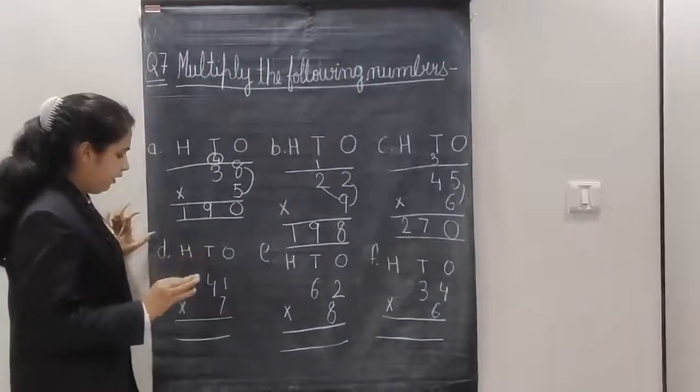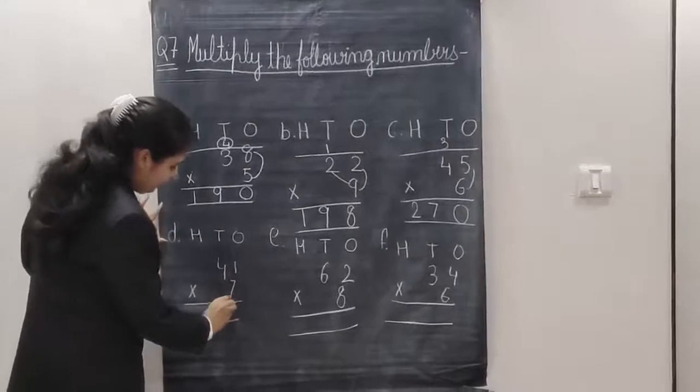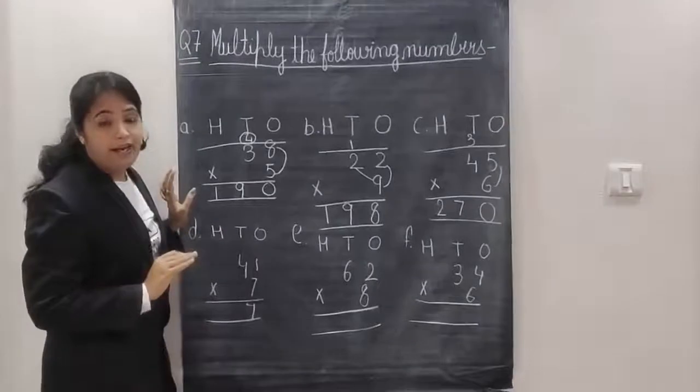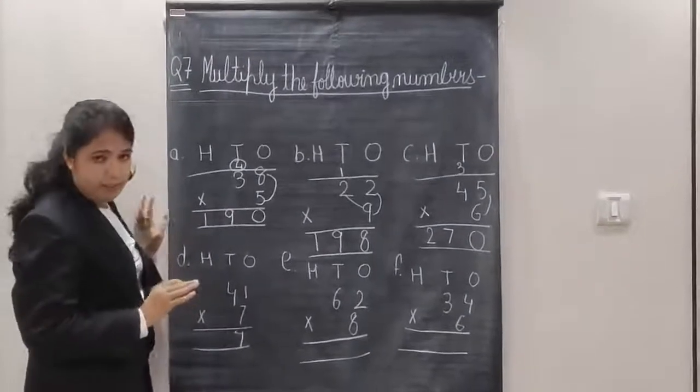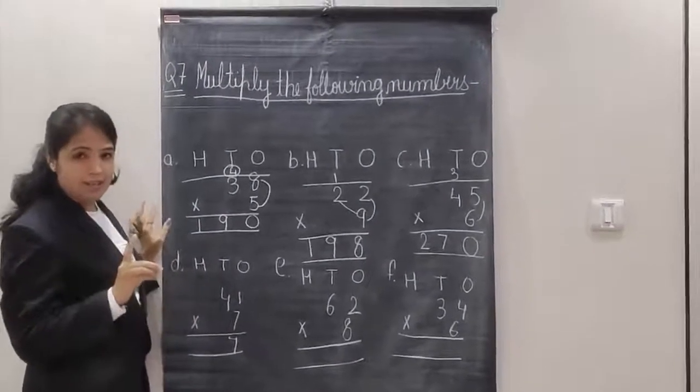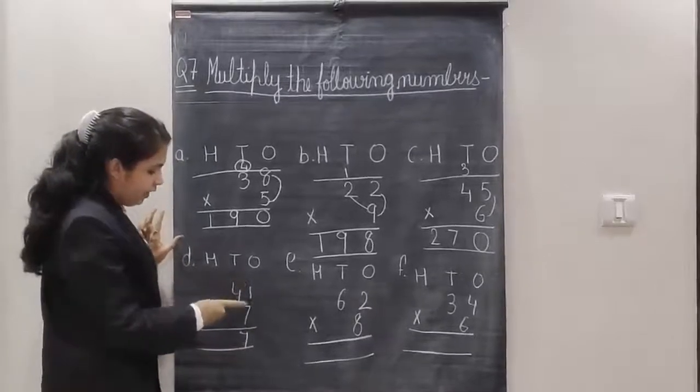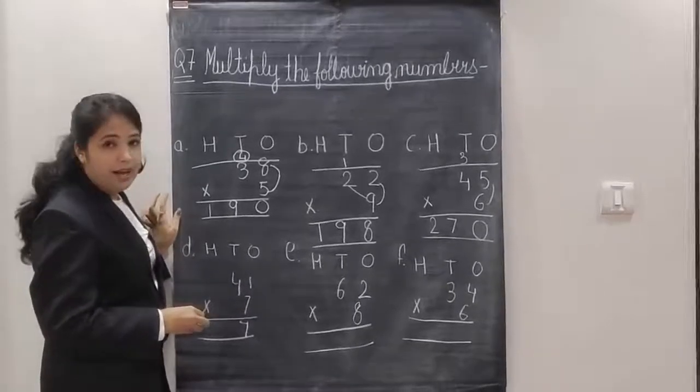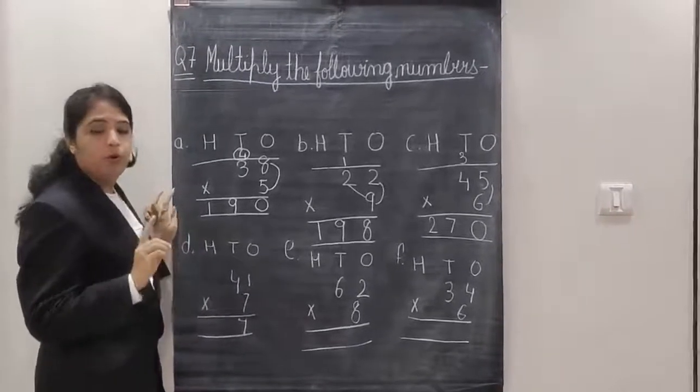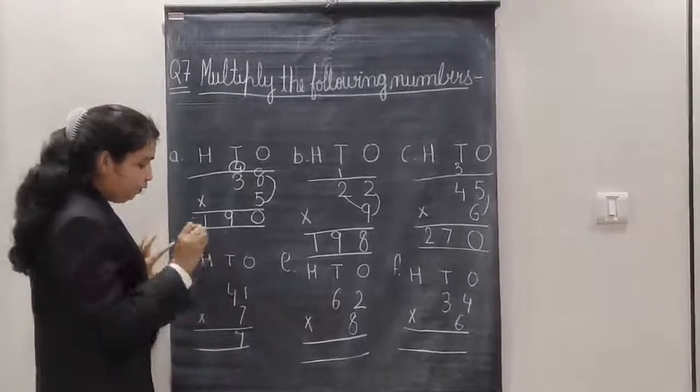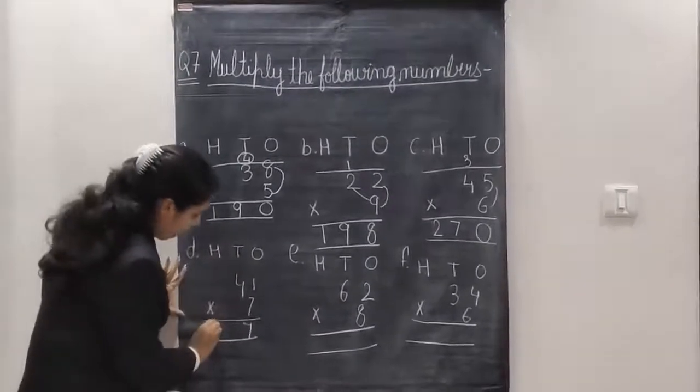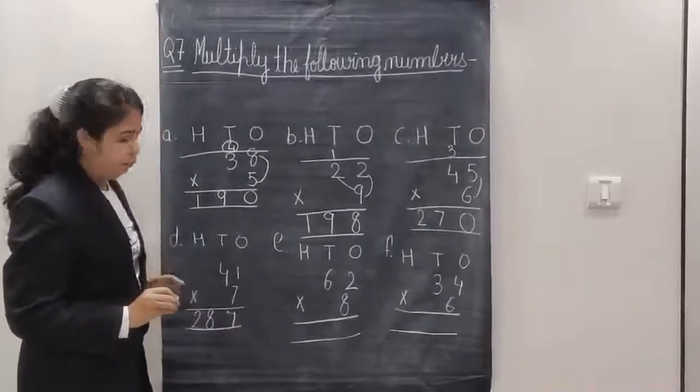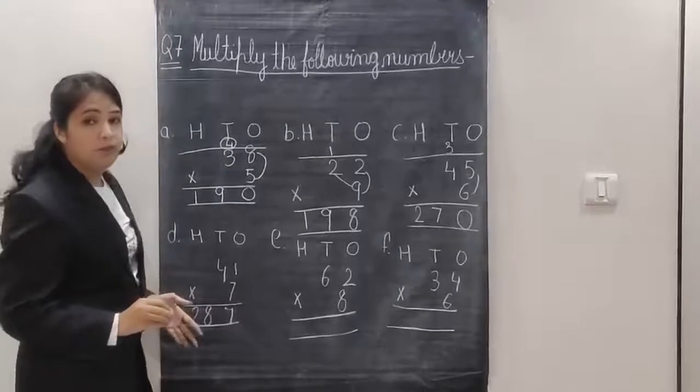Now, this is very easy sum. 7 ones are 7. Here you can see, I have not a carry over any number because the answer is in single digit. 7 ones are 7. Now, 7 fours are, the answer is 28. So, this time, no need to carry. Don't write any carry number. Just write down 28, 7 fours are 28. So, my answer is 287.